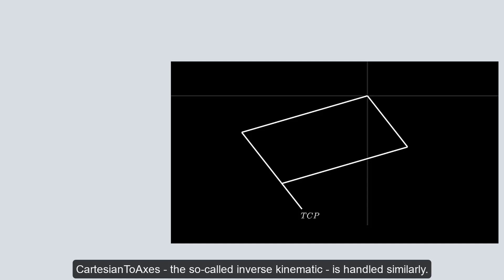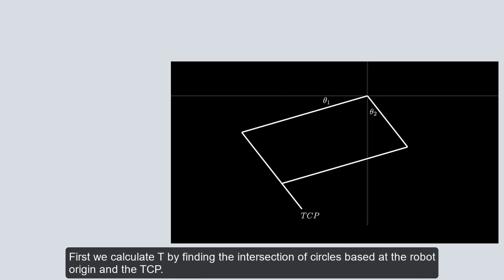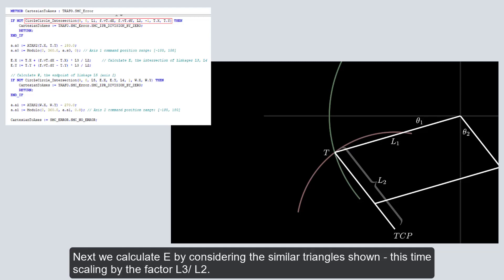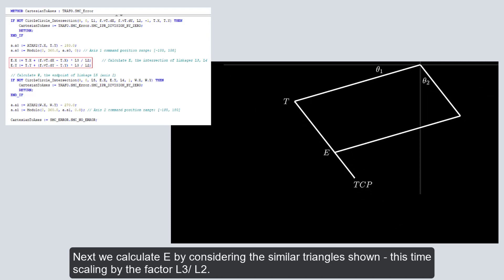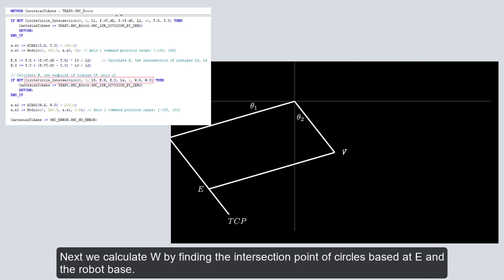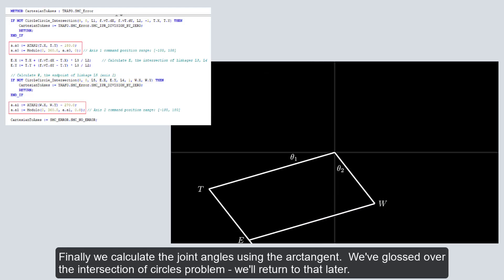CartesianToAxes, the so-called inverse kinematic, is handled similarly. In this case, we are given the tool center point and must calculate the corresponding joint angles. We calculate T by finding the intersection of circles based at the robot origin and the tool center point. Next, we calculate E by considering the similar triangle shown, this time scaling by the factor L3 over L2. Next, we calculate W by finding the intersection point of circles based at E and the robot base. Finally, we calculate the joint angles using the arctangent. We've glossed over the intersection of circles problem, but we'll return to that point later.